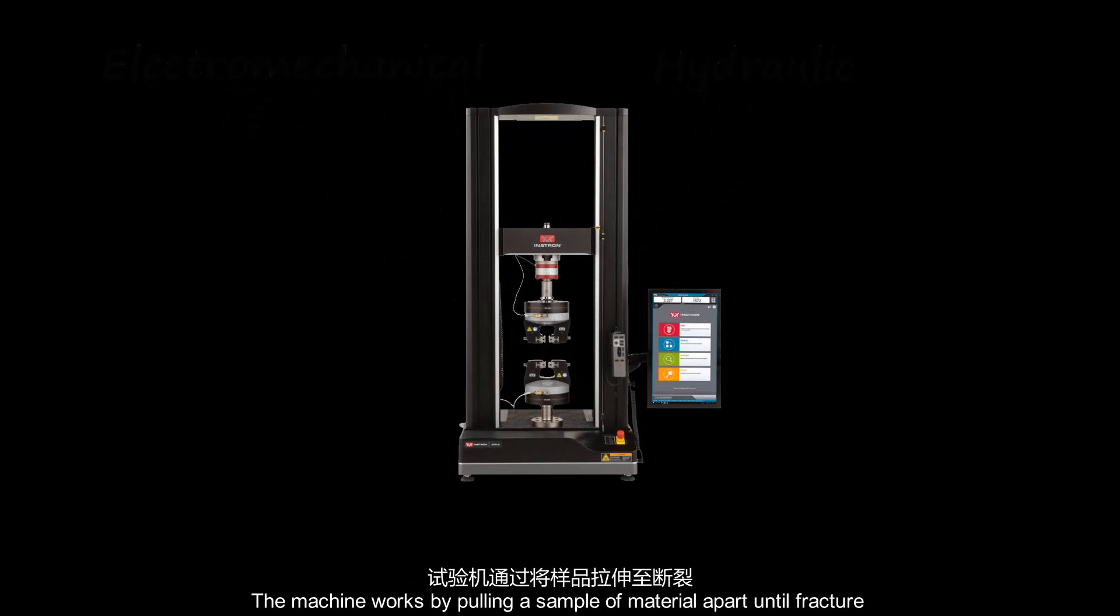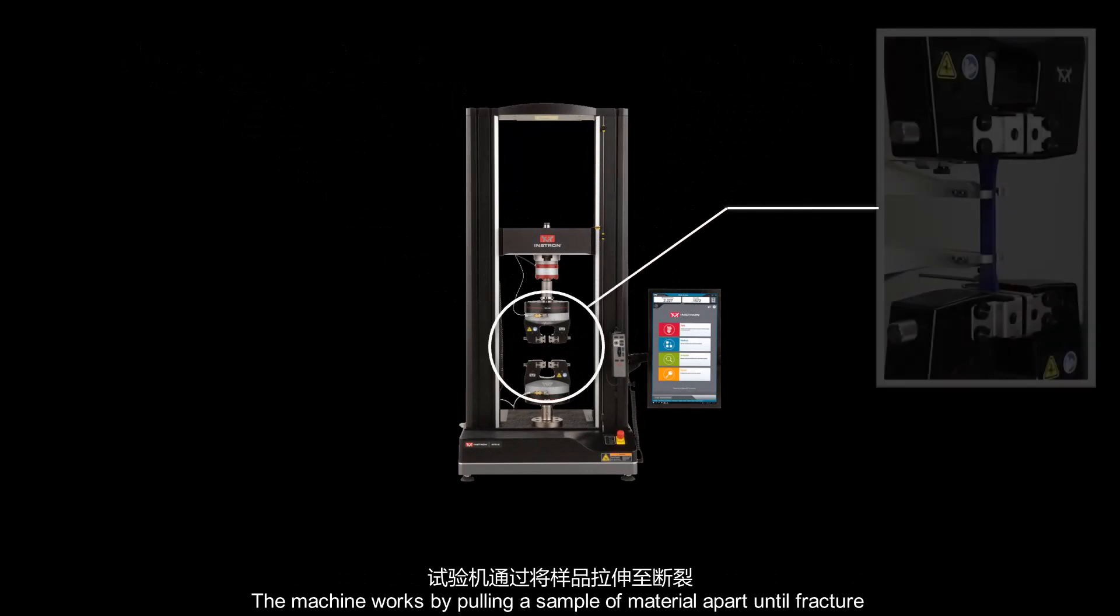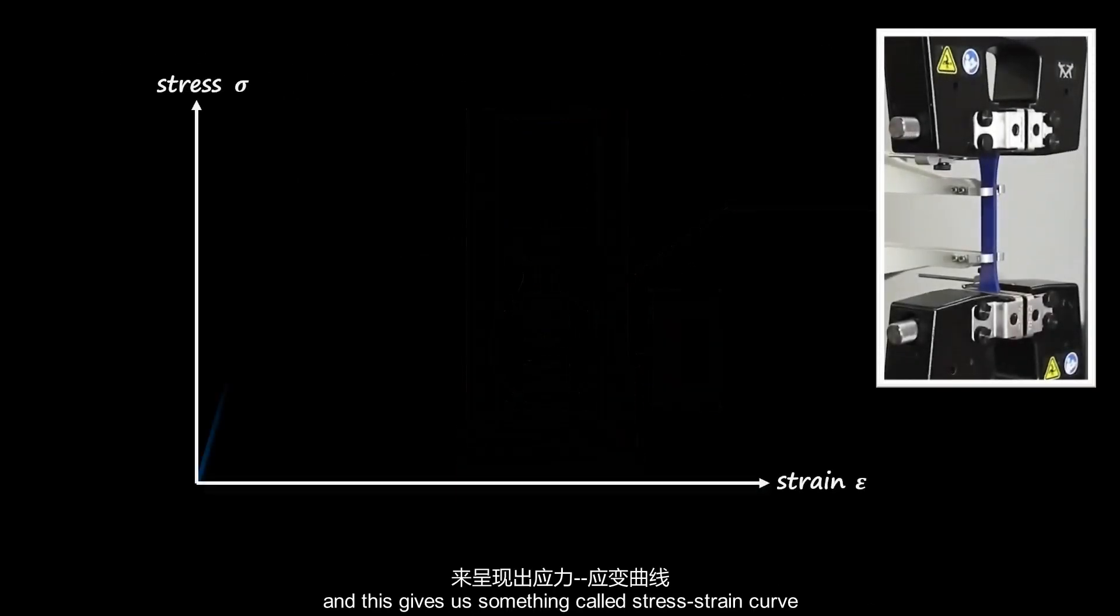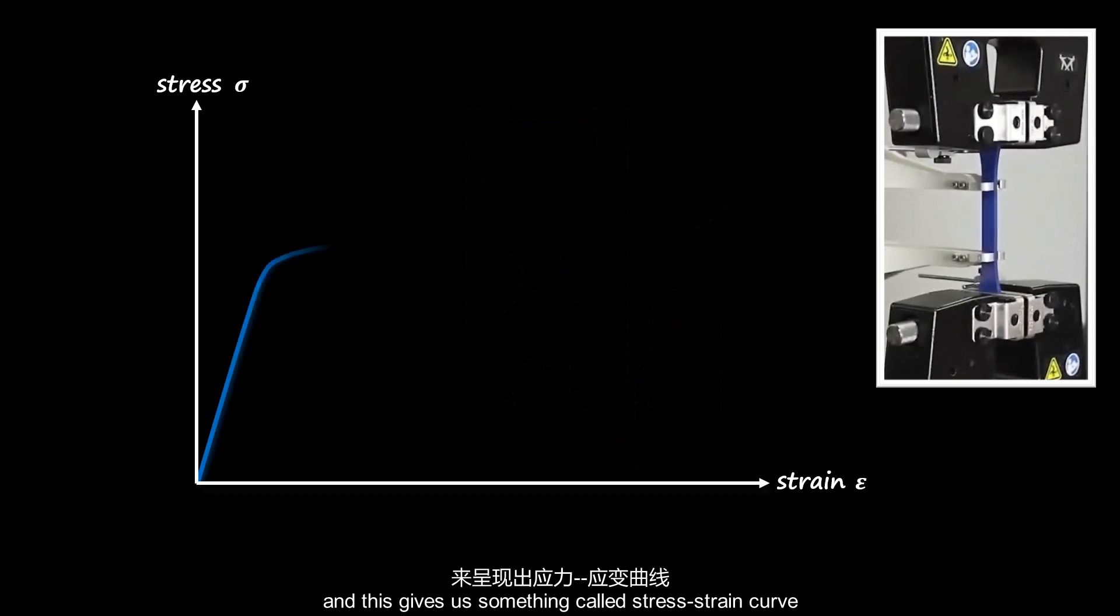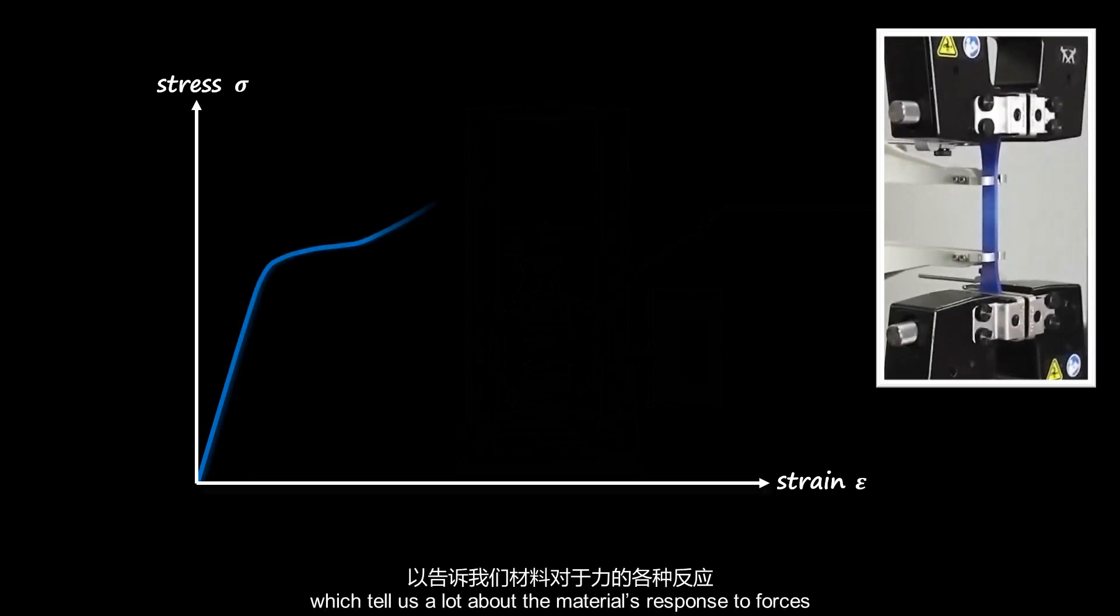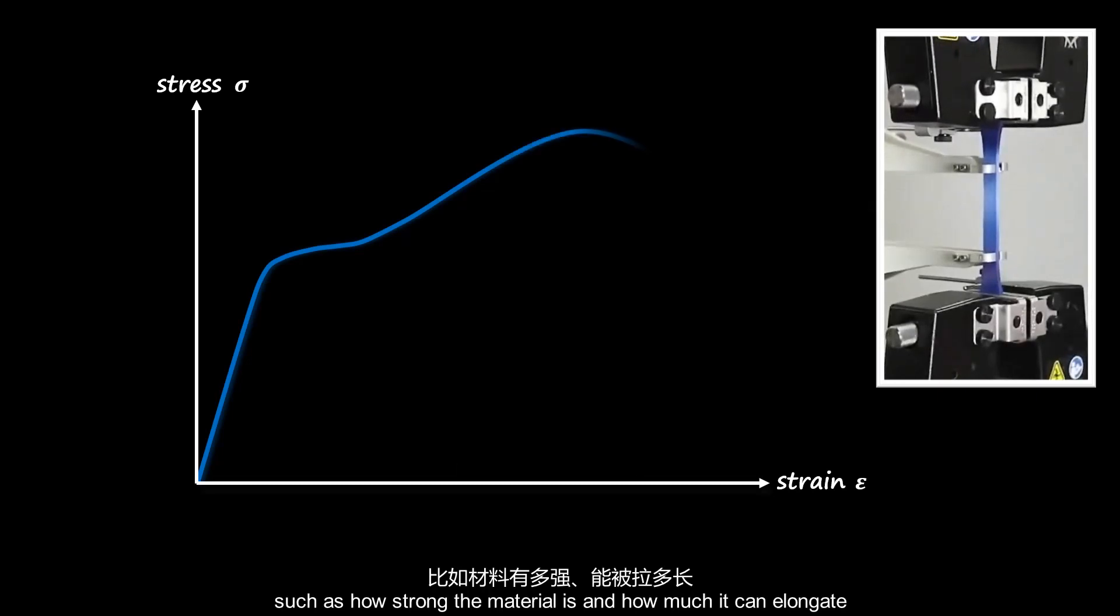The machine works by pulling the sample of a material apart until fracture, and this gives us something called a stress-strain curve, which tells us a lot about the material's response to forces, such as how strong the material is and how much it can elongate.